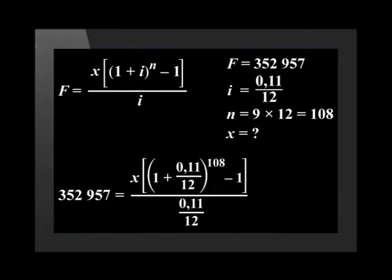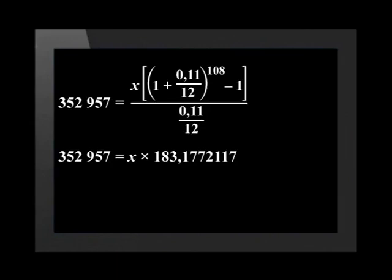We substitute these values into the formula and punch the values on the right-hand side of the equation into a calculator. This will give us 352,957 equals x multiplied by 183.1772117.